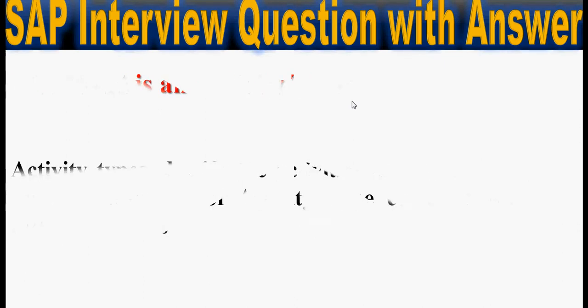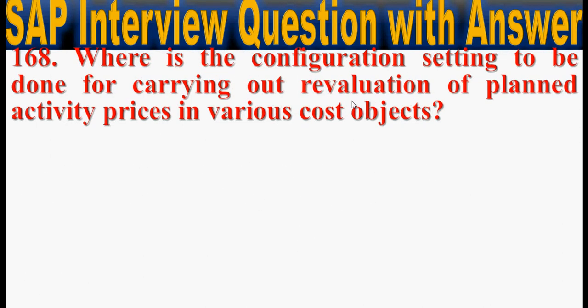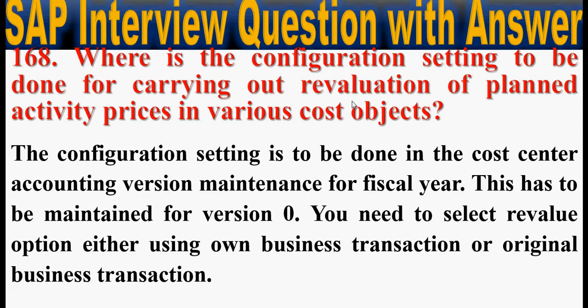Next, where is the configuration setting to be done for carrying out revaluation of planned activity prices in various cost objects? The configuration setting is to be done in the cost center accounting version maintenance for fiscal year. This has to be maintained for version 0. You need to select the revalue option either using one business transaction or original business transaction.